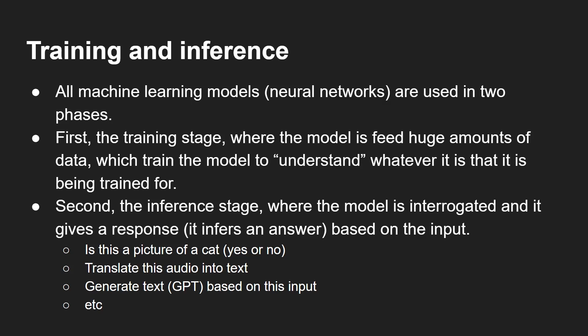Up until now that's mainly been about classification — is this a picture of a cat, yes or no? But we also have models that generate output: translating audio into text, for example, for voice assistants on Android and smart home devices. The real hot topic now is models that can generate text and images. There's even recent work on generating robotic movement sequences for factory tasks based on an input.